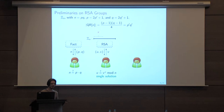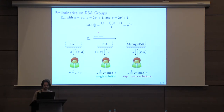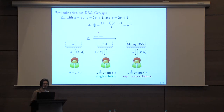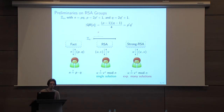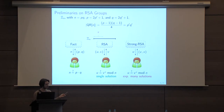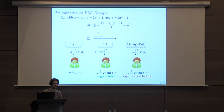The last assumption I want to describe is the strong RSA assumption, on which previous work was based. It looks like the standard RSA assumption — the adversary also has to find some root of a challenge u with some exponent x mod N — but the core difference is that the choice of exponent is entirely left to the adversary. The adversary must solve an RSA challenge for any exponent of its choice. What makes this assumption less desirable is that for a single challenge u there are exponentially many solutions, whereas in all standard RSA flavors there is only a single valid answer.